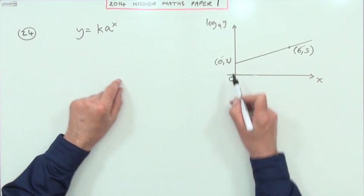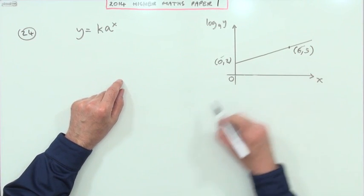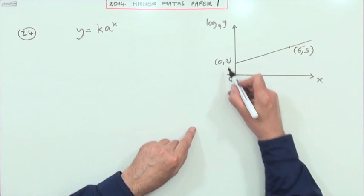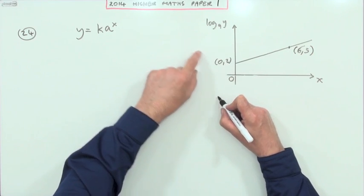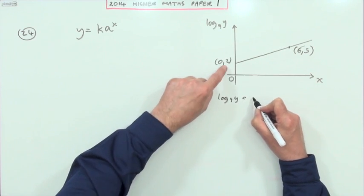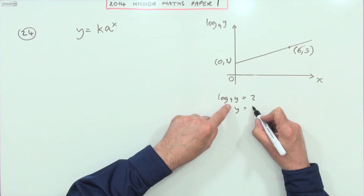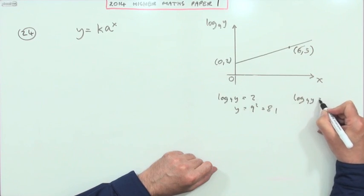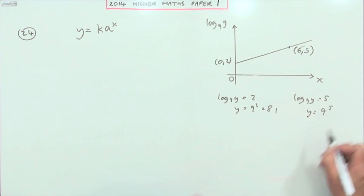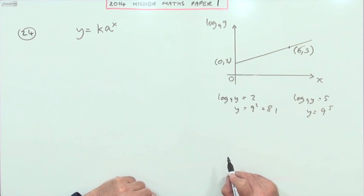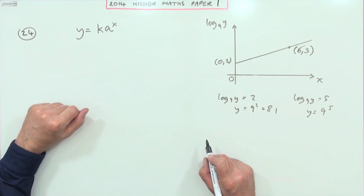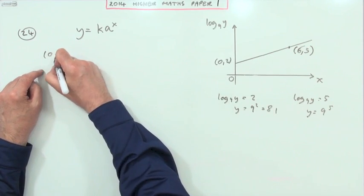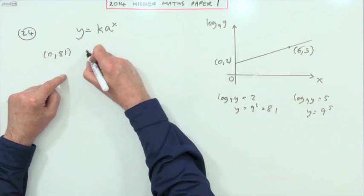But I'd have to have x and y values. Well I'm okay for x values, those are the 0 and the 6, but those are log 9 of y values. So for instance this one here, if log base 9 of y is 2, then I know that y must be 9 to the power 2, which is 81. And if log base 9 of y is 5, I know that y must be 9 to the power 5, which will not work out yet.